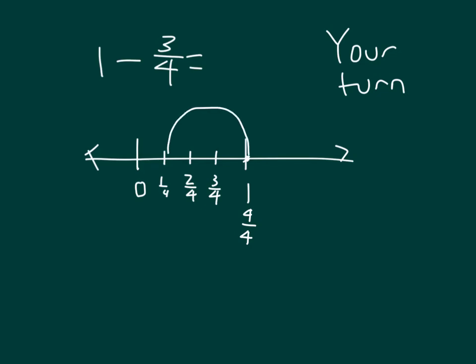So we're subtracting there 3 fourths from 1 whole. And we get 1 fourth. So 1 again is written as 4 fourths, subtract 3 fourths, and we do get 1 fourth. Did you record this number sentence along with the visual model?